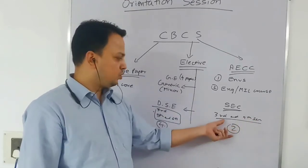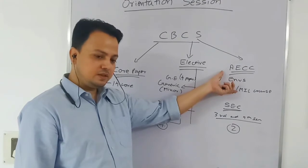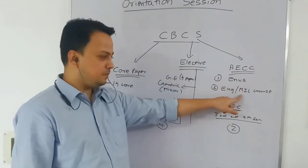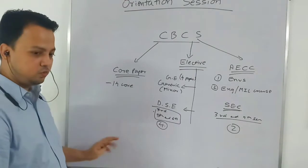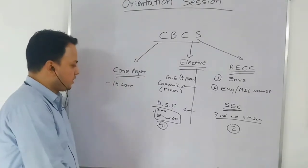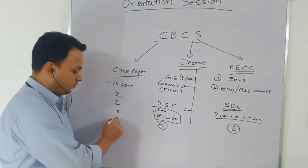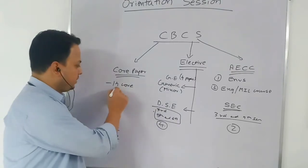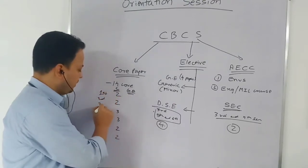So in SEC you do two papers. In AECC you do two compulsory papers — you don't get a choice there except in the Modern Indian Language section. SEC papers come in the third and fourth semester. To summarize: in the core paper you do 14 papers — two in the first semester, two in the second, three in the third, three in the fourth, and two in each of the last two semesters.